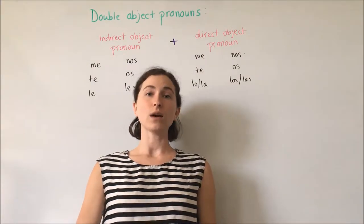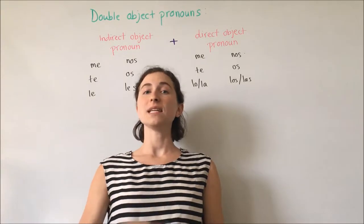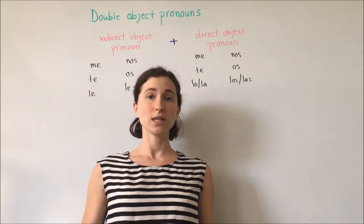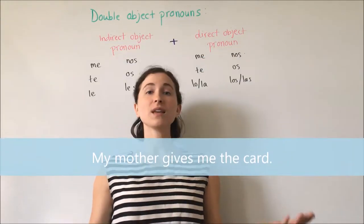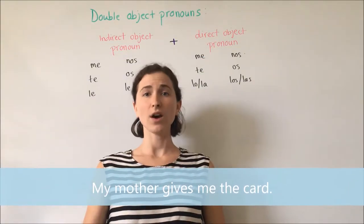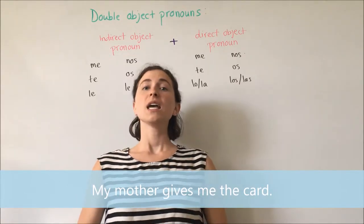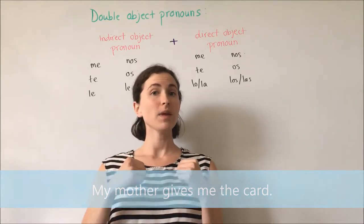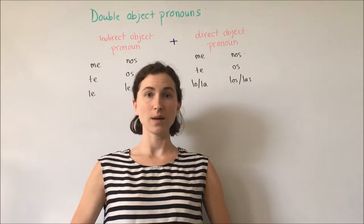The direct object is the noun that is directly acted upon by the verb, whereas the indirect object is to whom or for whom is the direct object. So if we have the sentence, 'My mother gives me the card,' the direct object is the card — what does my mother give me? The card. And to whom does my mother give the card? Me. So I am the indirect object and the card is the direct object.